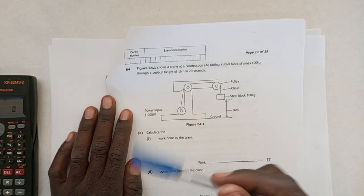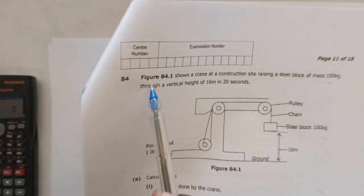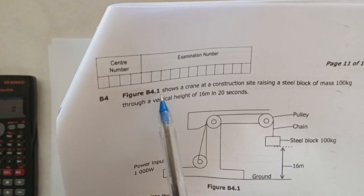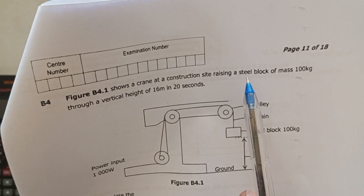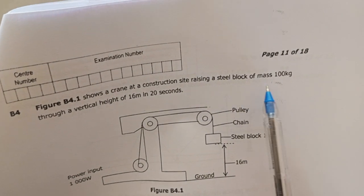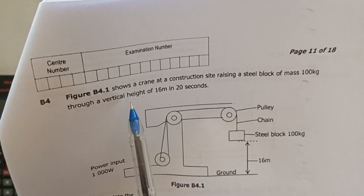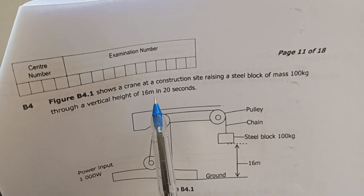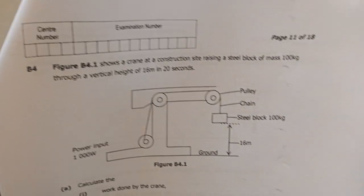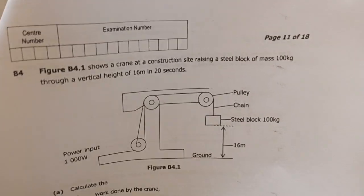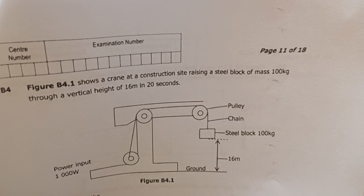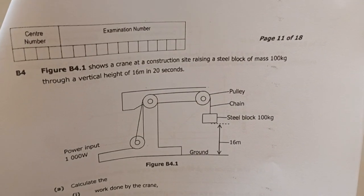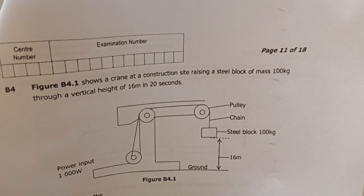To move on to question B4. The question says figure B4.1 shows a crane at a construction site raising a steel block of mass 100 kg through a vertical height of 16 meters in 20 seconds. So in this question you will be asked the work done, the weight of the block and the power because there is time here.